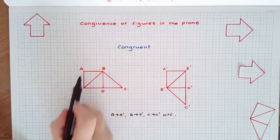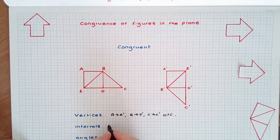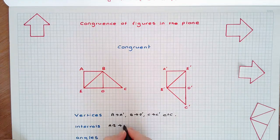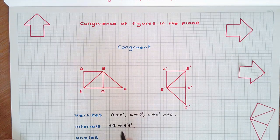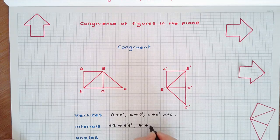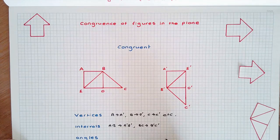The intervals AB became A dash B dash. The interval BC became B dash C dash, etc.